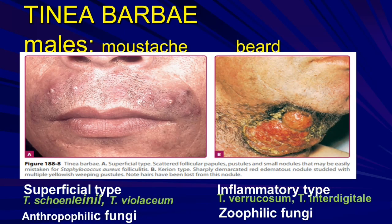Tinea barbae occurs in males in the mustache and beard area. We can see superficial scattered follicular papules and pustules, small nodules. This can be mistaken for Staphylococcus aureus folliculitis, but this is tinea barbae infection requiring antifungal treatment. The superficial type is anthropophilic; the inflammatory type is zoophilic — organisms include Trichophyton violaceum, Trichophyton verrucosum.